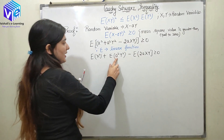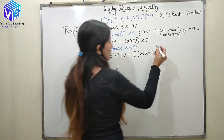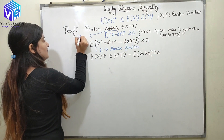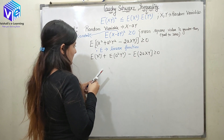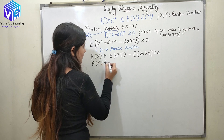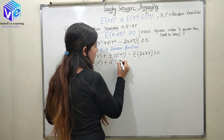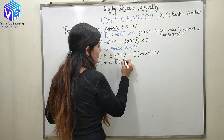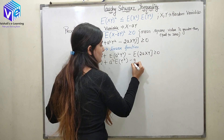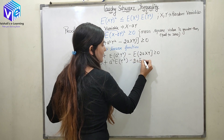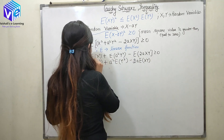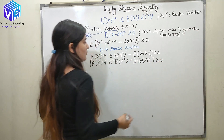Now, when I talk about a, it is a constant. Since a is a constant, the expectation of X² plus — as this constant comes outside (this is the property of expectation) — a² times E[Y²] minus 2a times E[XY] is greater than or equal to 0.